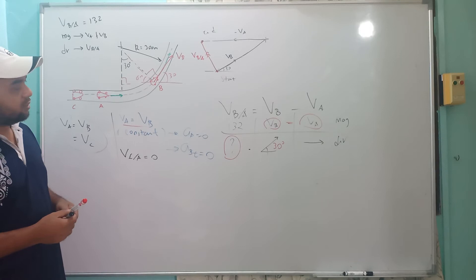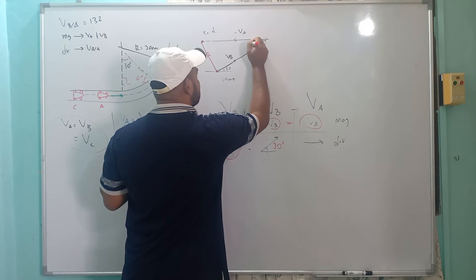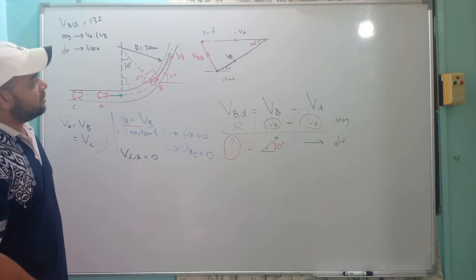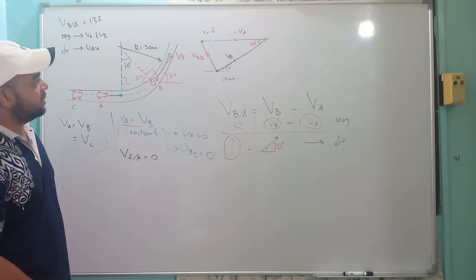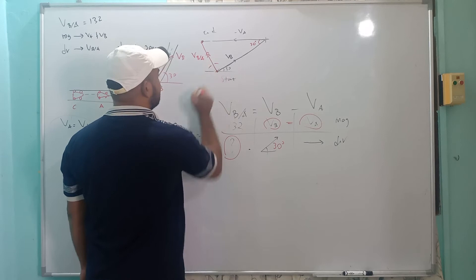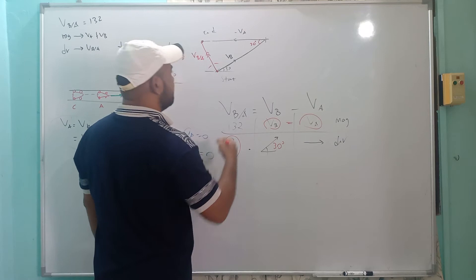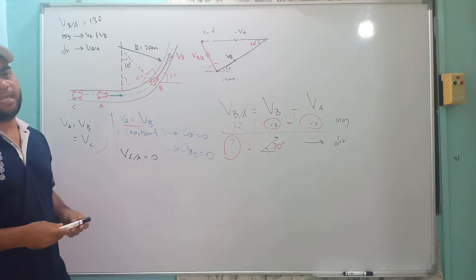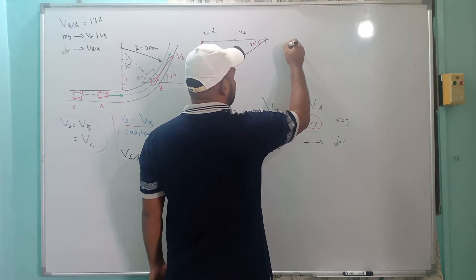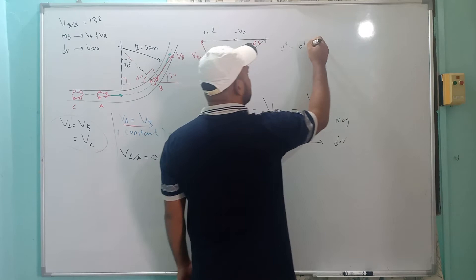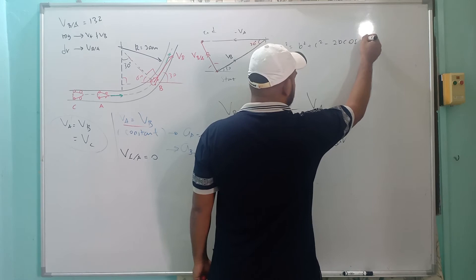Since this angle here is 30 degrees, this corresponding angle inside the triangle must also be 30 degrees. We do not yet know the remaining interior angle or the length of VBA. We can use either the sine rule or the cosine rule. The cosine rule states: a² = b² + c² − 2bc·cos(A).